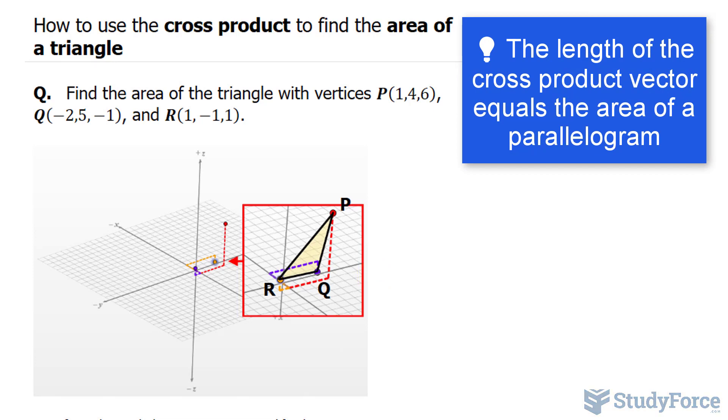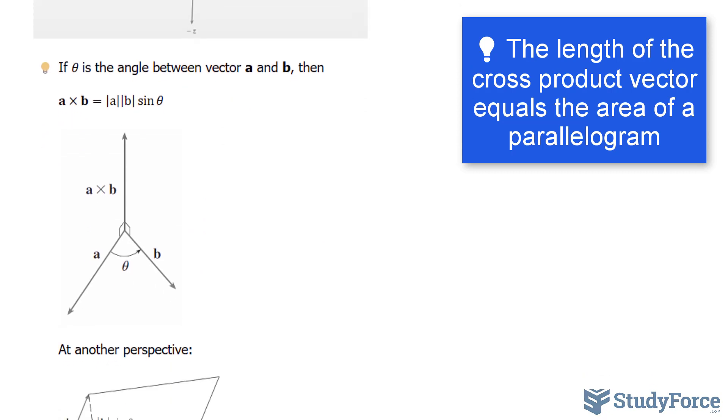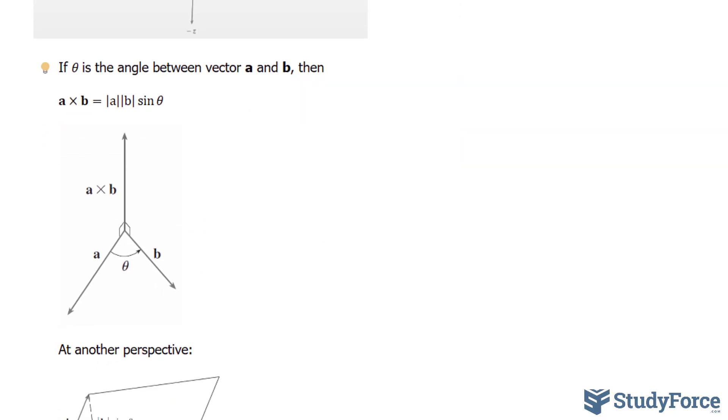Now if you find that confusing, I want to show you a few illustrations. So this is the definition that we know already about the cross product, that it equals to a vector that is perpendicular to the two vectors it represents. Notice this is perpendicular to these two.